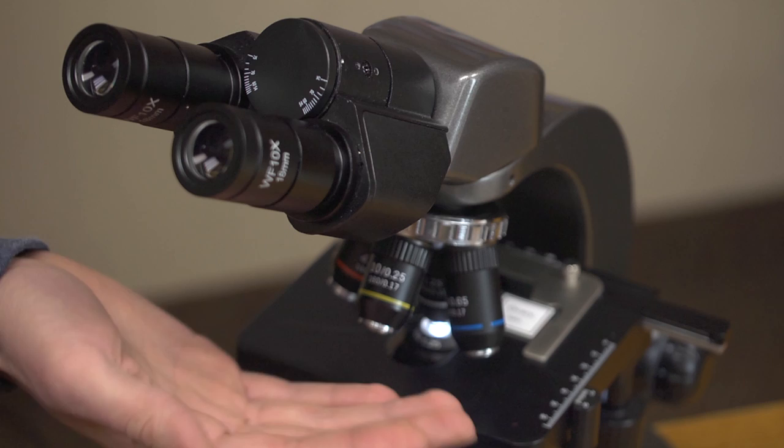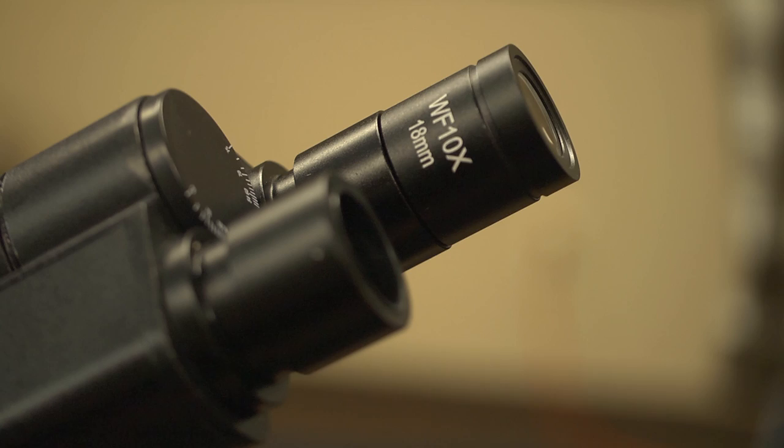To figure out the magnification range of your microscope, just multiply the power of the eyepieces with the power of each individual objective lens. In this case, our 10 power wide field eyepieces will give you a range from 40 to 1000 times.